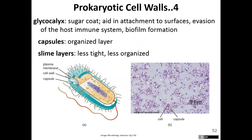Surrounding the bacterial cell wall is a structure known as a glycocalyx — essentially a sugar coat that surrounds the cell, functioning in protection and allowing cells to form biofilms. The glycocalyx can be organized into a structure known as a capsule, or when less organized it is called a slime layer. In both cases the glycocalyx protects the bacterial cell from the host's immune system and helps the cell adhere to surfaces in the formation of a biofilm.